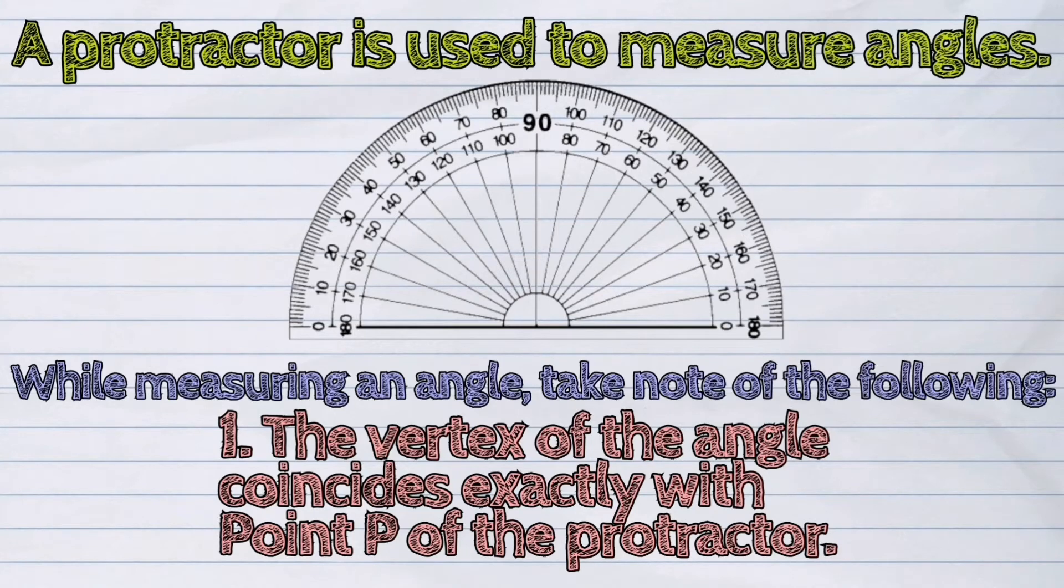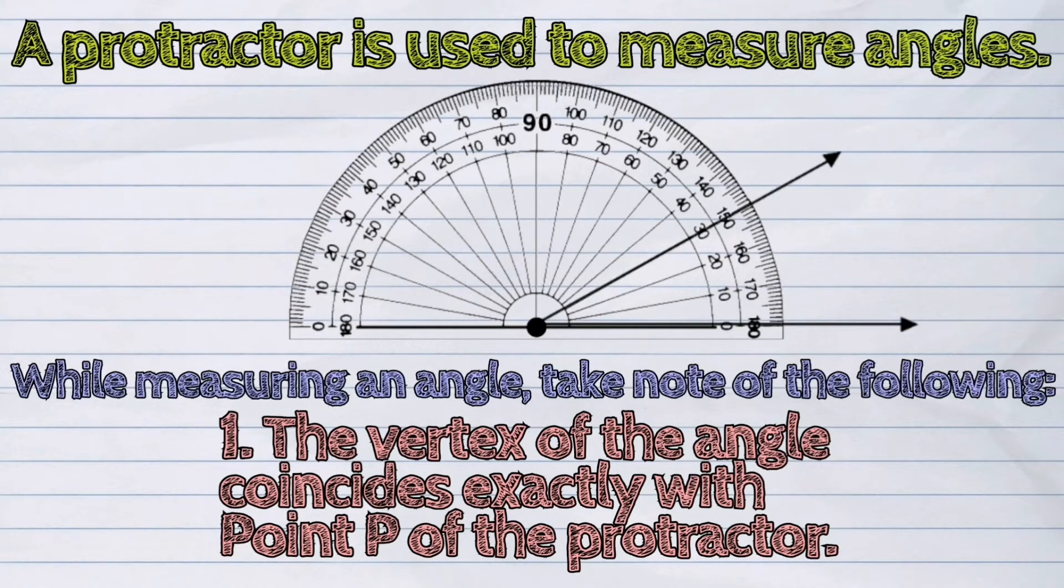First, the vertex of the angle coincides exactly with point B of the protractor.